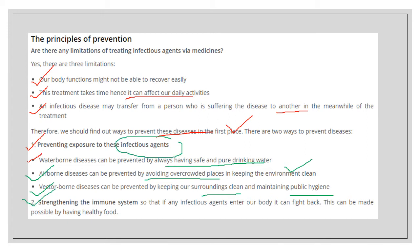The second approach is strengthening the immune system, which is also very important. What is the function of the immune system? If any infectious agents enter our body, the immune system can fight back. This can be made possible by eating healthy food.